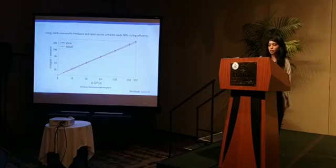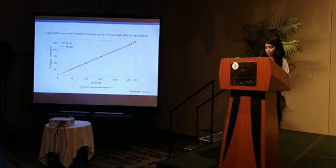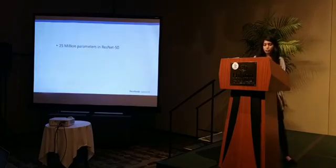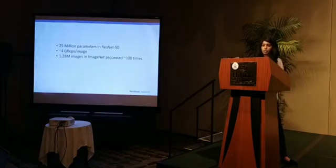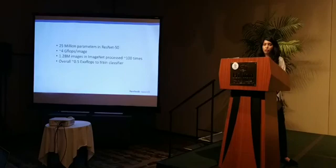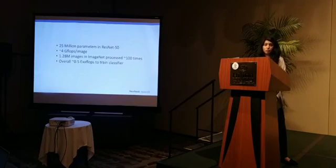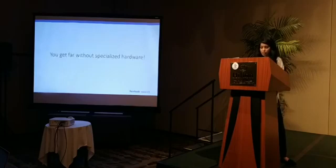We also tried going to a larger number of GPUs and can still achieve good efficiency, though accuracy requires some work. To highlight the magnitude of computation involved: our ResNet-50 architecture has 25 million parameters, 4 gigaflops per image, and the ImageNet dataset has approximately one million samples that need to be processed 100 times. This means overall we have about half an exaflop that we need to compute in order to train the classifier accurately. Using Caffe2, 100% commodity hardware, and our scaling techniques, we could do it all in just one hour.